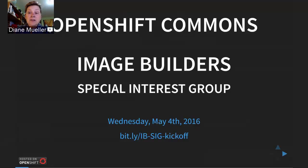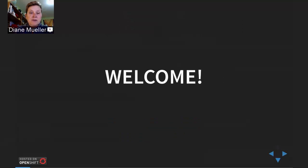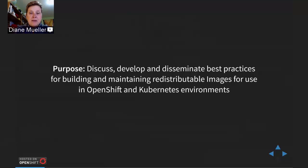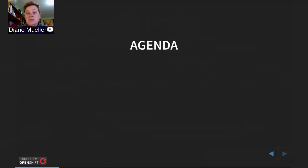I'm going to unmute everybody — that's going to be the interesting thing today. I'd like to have Ryan kick off the call and give a little bit of background, because he's been working on getting Node.js images ready, doing a lot of OpenShift evangelism, and using the processes to build those images. The purpose is really about discussing, developing, and disseminating the documentation and best practices for building and maintaining those images on OpenShift and Kubernetes.